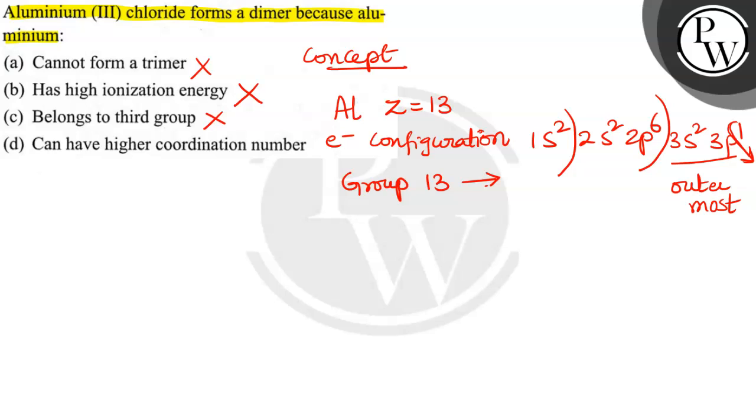What is option D given here? Can have higher coordination number—yes, why? Because in aluminium chloride, if you see the structure: Al-Cl, Cl, Cl. There are how many electrons around aluminium? One, two, three, four, five, six. There are six electrons. Even after the bond formation, it is not completing its octet. It is not stable because it has six electrons. With eight electrons, it becomes octet and will be stable.